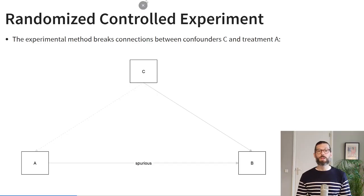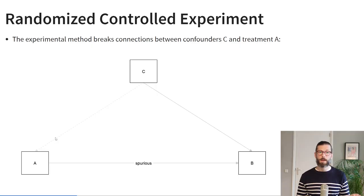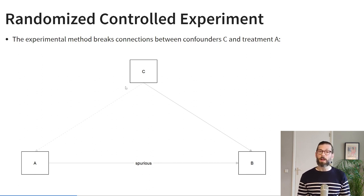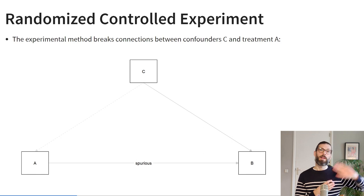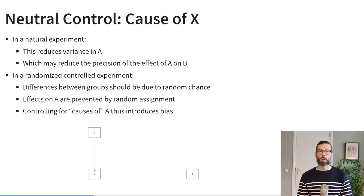Why is the experimental method so great at detecting causal effects? It's great because it breaks any connections between confounders and the treatment A. In a natural experiment, belief in the efficacy of a supplement will increase the likelihood that people take it, creating a connection between C and A. But if we randomly assign people to receive the supplement or not, that connection is broken — we break any arrows going into the intervention variable, thereby eliminating a whole slew of confounders.